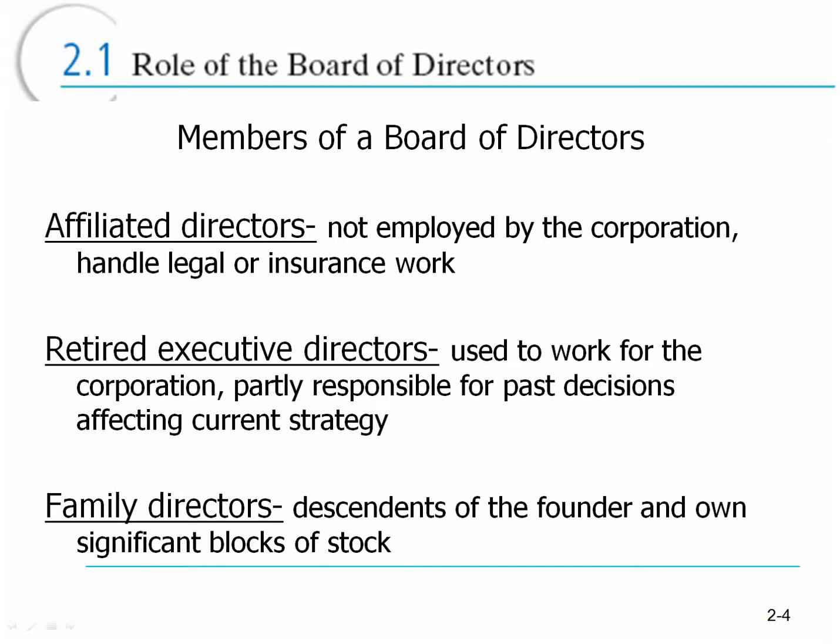Board members are supposed to bring value to the company. As such, you want board members that are experts in their industry or related industries, able to use their connections and resources to help further the goals of your company. If you are an affiliated director, the idea is that you're bringing these resources to the organization to help them achieve their strategic goals. So having the CEO of a very large insurance company on your board of directors can add tremendous value.